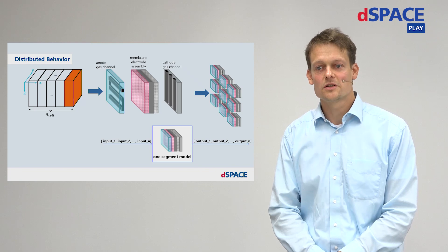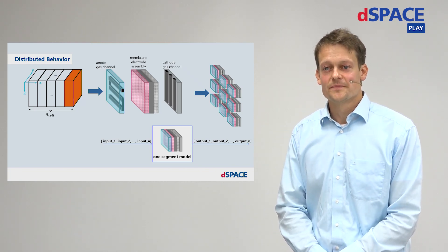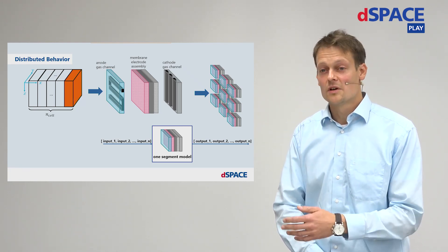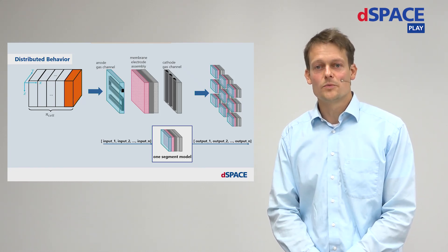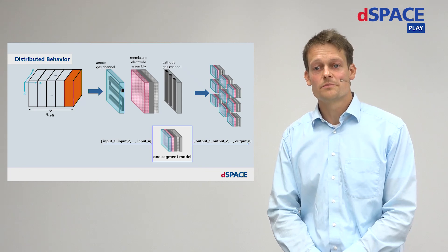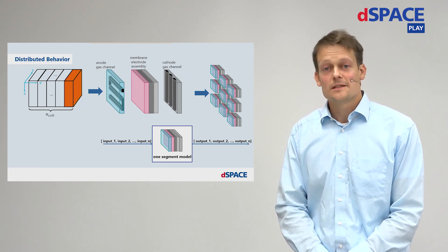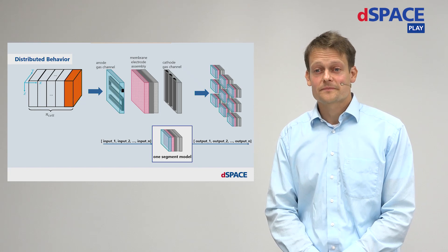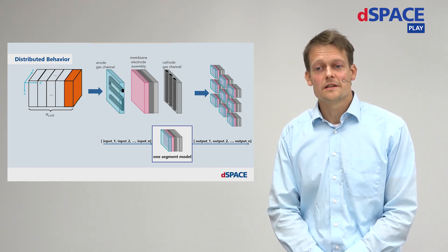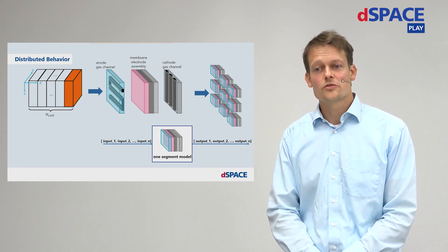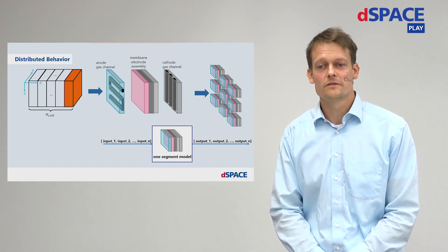The desired voltage of the whole stack is provided by connecting the cells in series. The voltage of each cell is calculated based on the Nernst voltage, as well as ohmic losses — which also depend on temperature and water content — as well as the activation losses caused by the limited reaction kinetics during oxidation and reduction reaction of the oxygen. These are described by the Butler-Volmer equation.